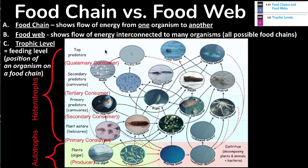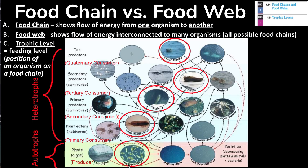Looking at our revealed food web, we can see complex interactions with many arrows. Within the web we can identify a chain — highlighted in red circles: phytoplankton to zooplankton to fish to the seal and then to the polar bear. This is one chain out of many that could have been identified. The chain shows individual connections at each trophic level, while the web shows all possible connections that exist.